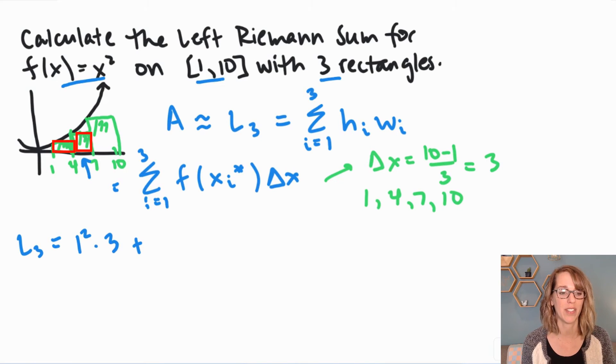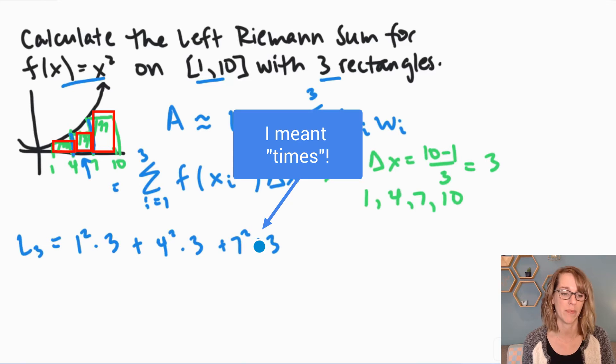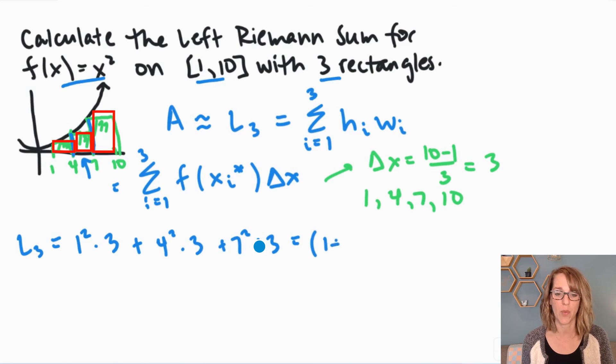Next rectangle. So now I'm at the second rectangle. Its height is going to be 4 squared, which is 16 times 3. And then that last height is going to be 7 squared. So plus 7 squared times 3. I can do this by hand.